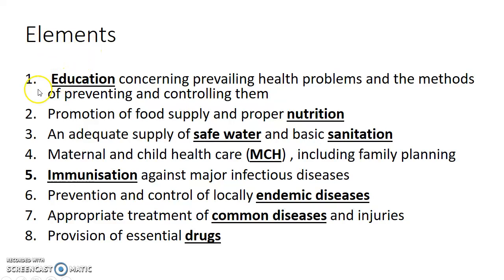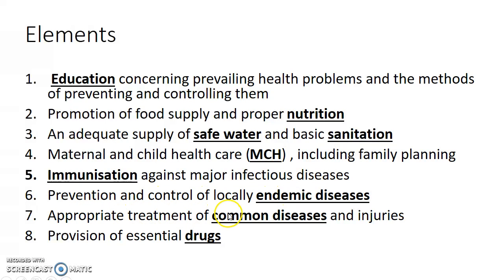Primary health care has eight elements: education concerning prevailing health problems and the methods of preventing and controlling them; promotion of food supply and proper nutrition; an adequate supply of safe water and basic sanitation; maternal and child health care including family planning; immunization against major infectious diseases; prevention and control of locally endemic diseases; appropriate treatment of common diseases and injuries; and provision of essential drugs.